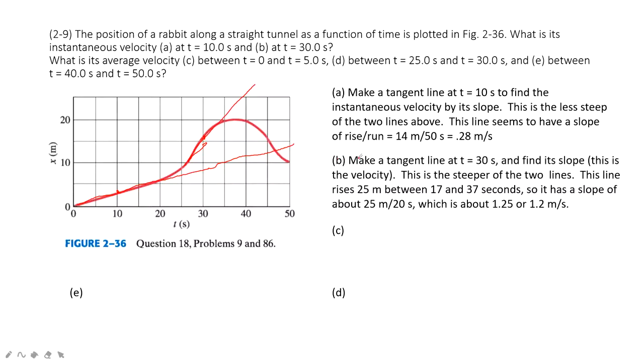Then when we want to find it, we find the slopes. So this line rises 25 meters between 17 seconds to 37. So there is 37, we can see this one. And then draw this line, it comes from there.